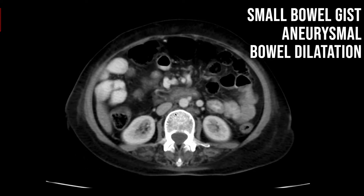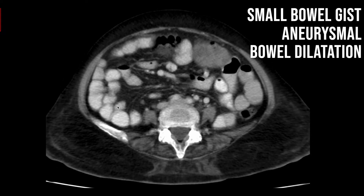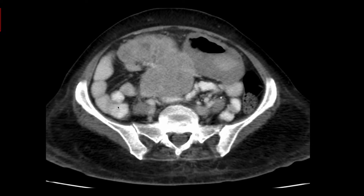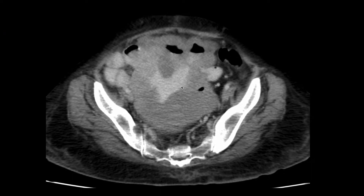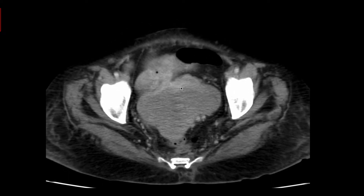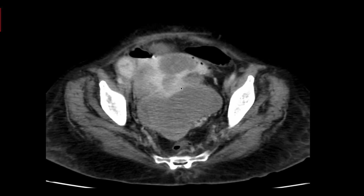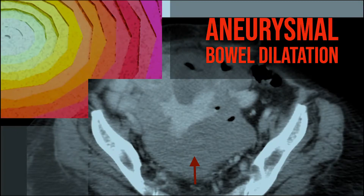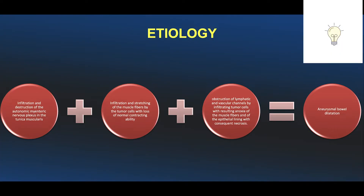The tumor was showing an air-fluid level; the irregular walls are very well appreciated here. Other small bowel loops are normal, and there was normal flow distal to the lesion. The large bowel loops were collapsed. This is a case of gastrointestinal stromal tumor with liver metastasis.